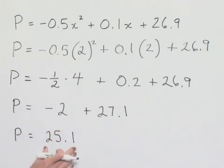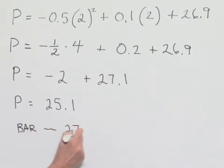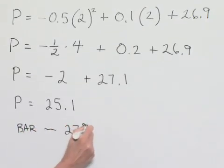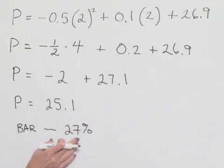Now remember at this point we're supposed to be comparing this to what we saw in the bar graph. Recall that the bar graph told us that our percentage was going to be 27%. So we can see right off the bat that this is going to be an under-representation of the actual percentage.